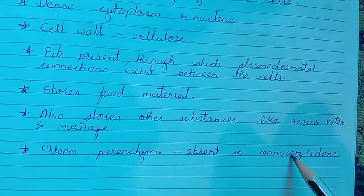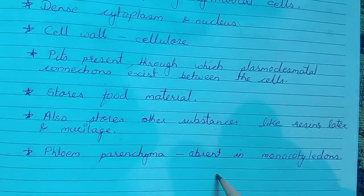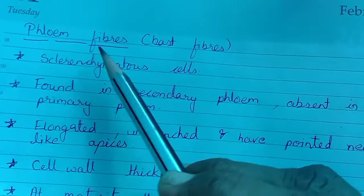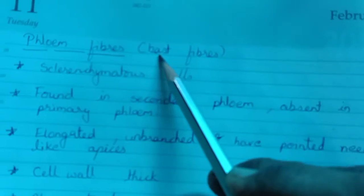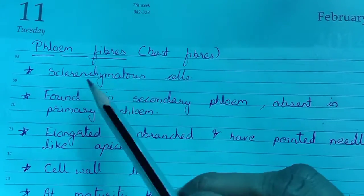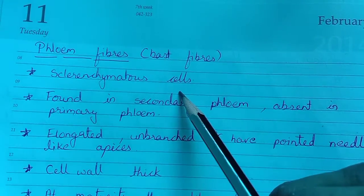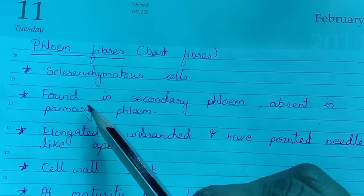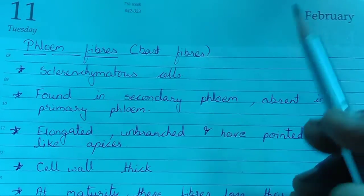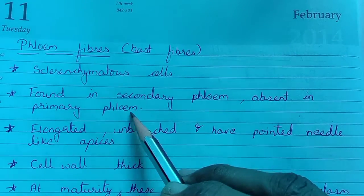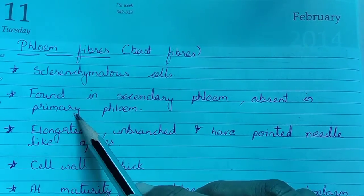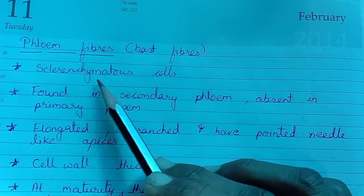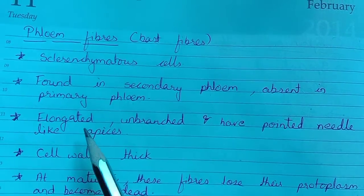Phloem parenchyma is absent in monocotyledons — it is present only in dicots. Next are phloem fibers, otherwise known as bast fibers. They are sclerenchymatous, meaning the cell wall is much thickened. Phloem fibers are found in secondary phloem and absent in primary phloem.